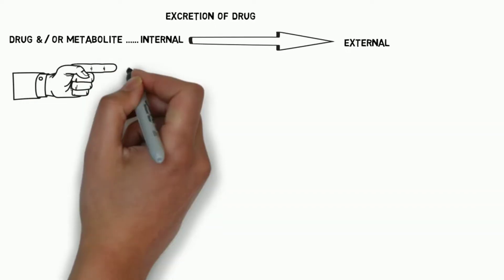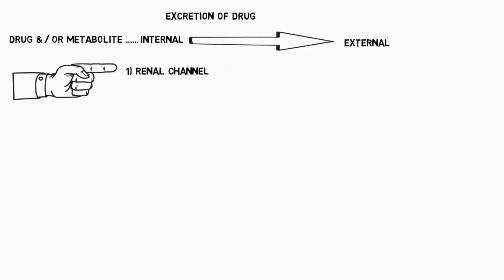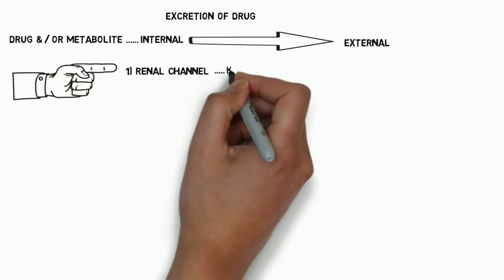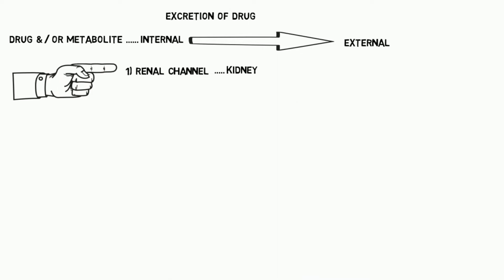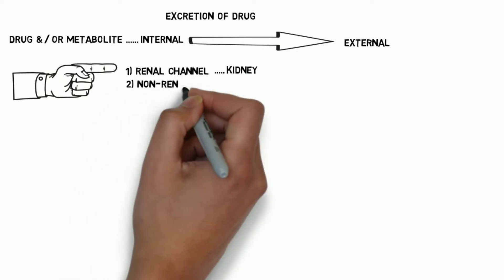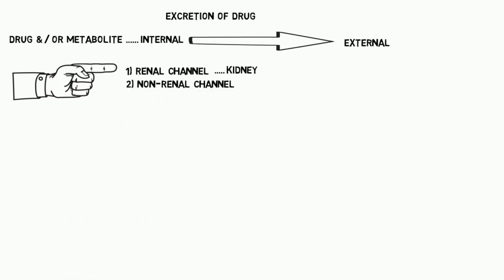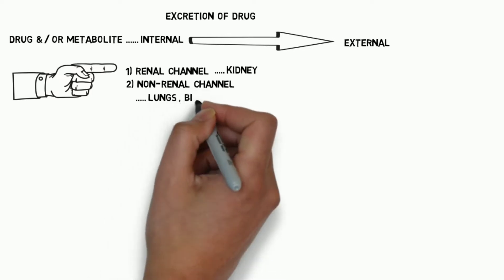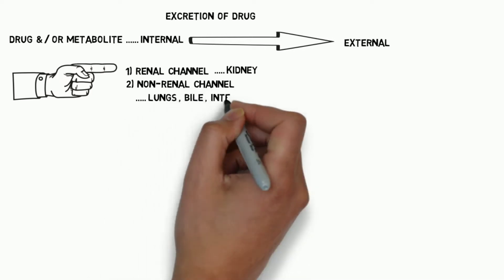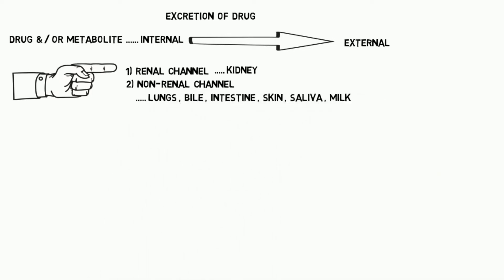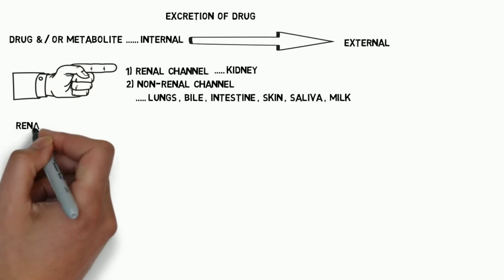We have two types of excretion of drug: renal channel of drug excretion, through kidney, and non-renal channel of drug excretion — that is through lungs, bile, intestine, skin, saliva, and milk.